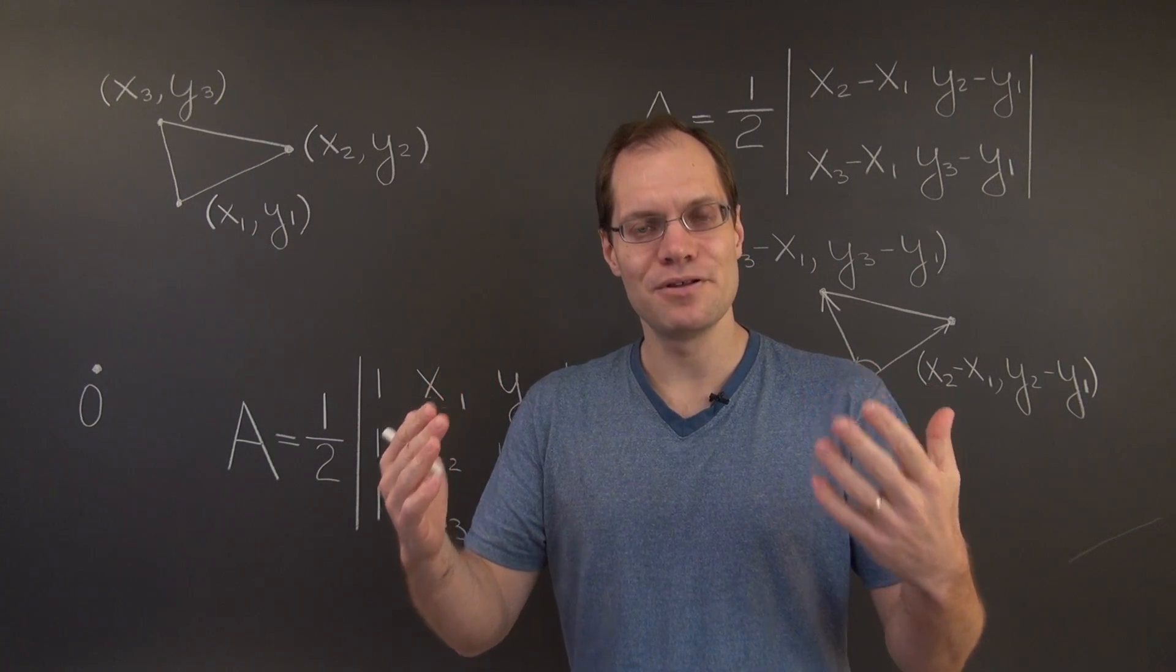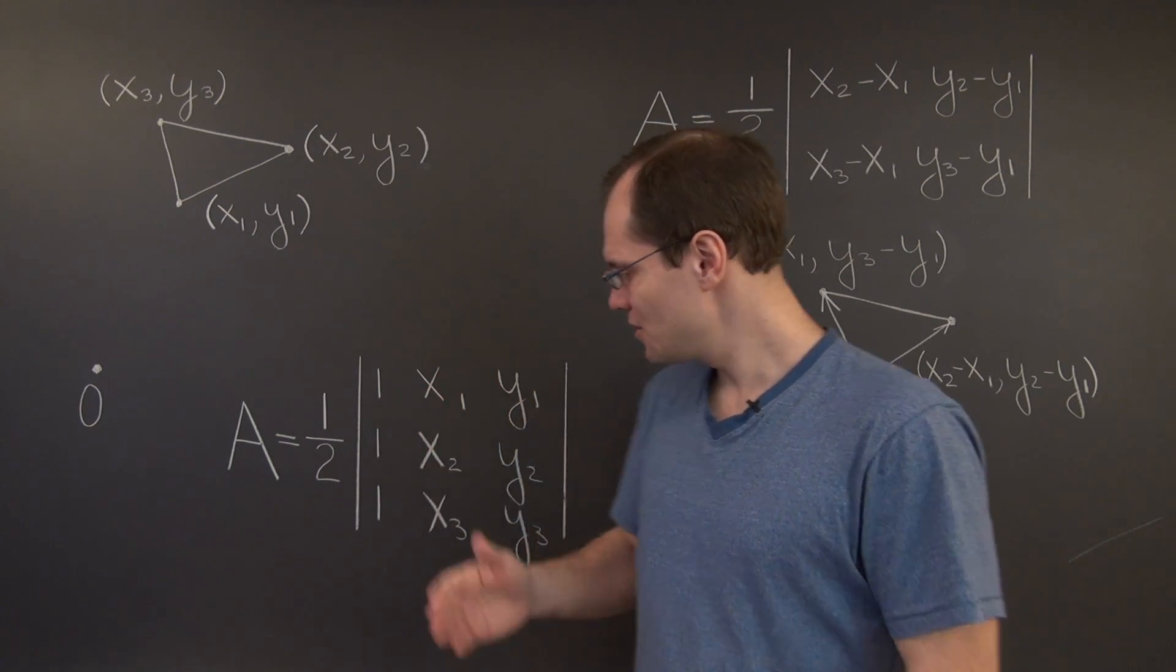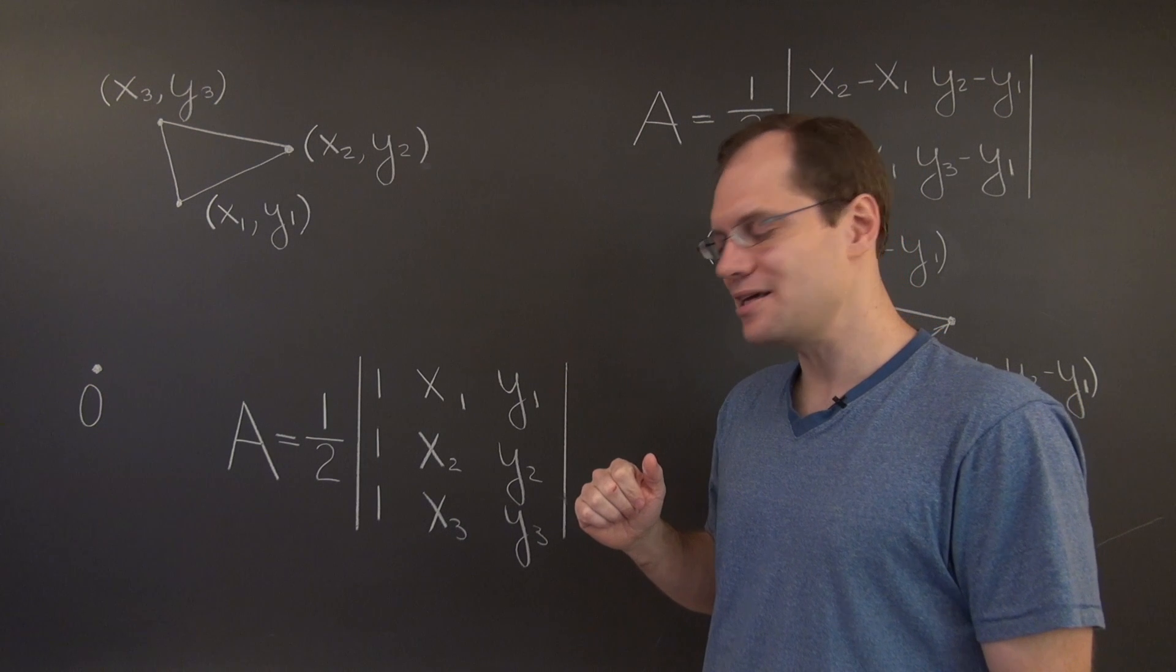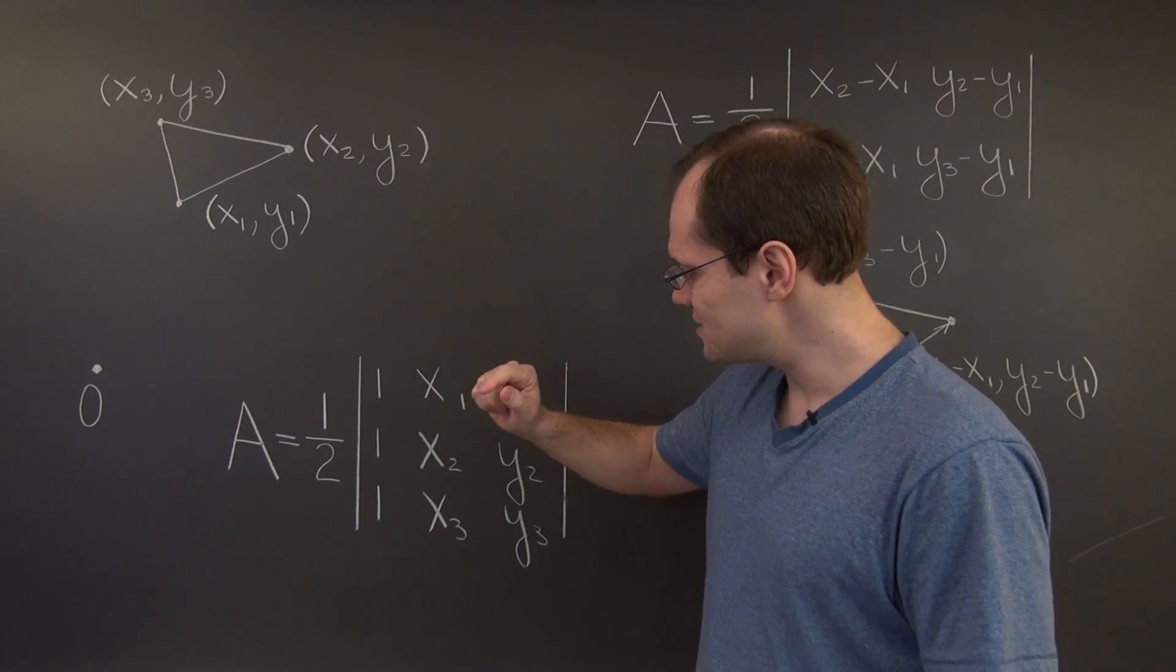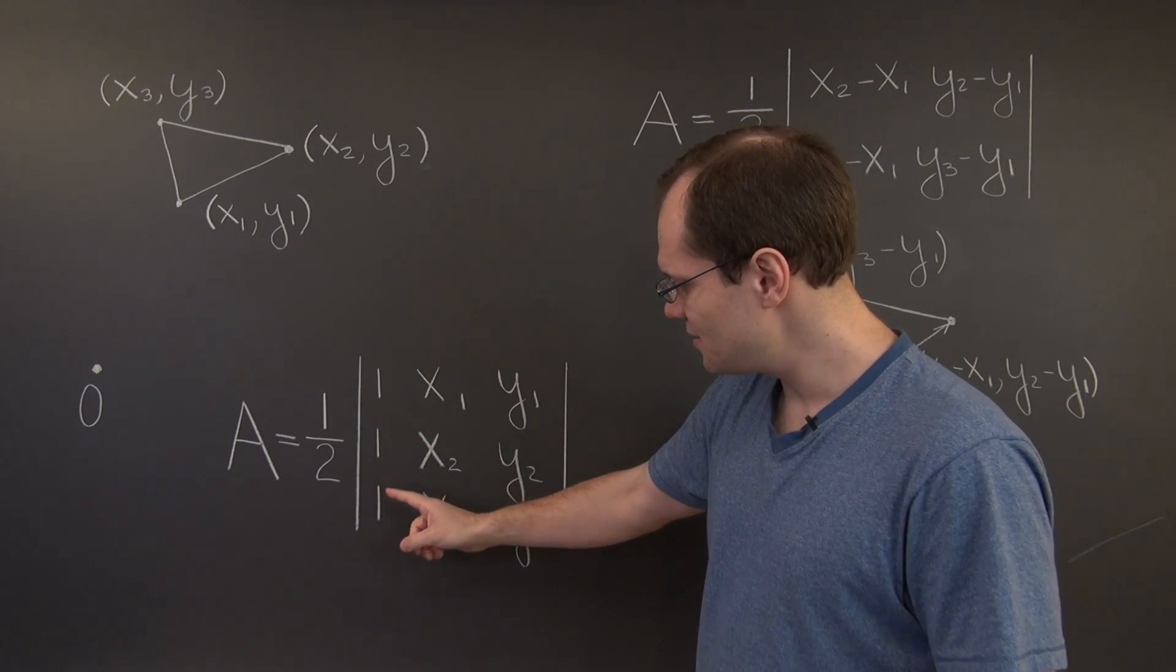Namely, adding a multiple of one row to another. So let's perform these two steps of Gaussian elimination and use this one as a pivot and eliminate this one and this one.